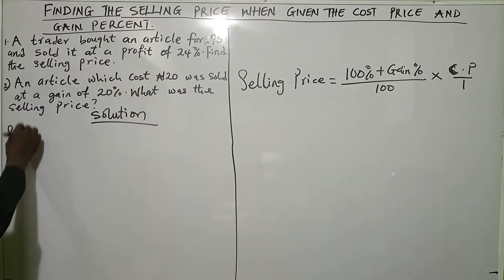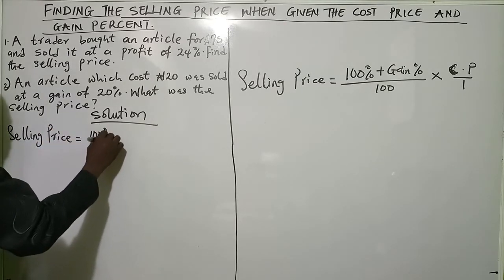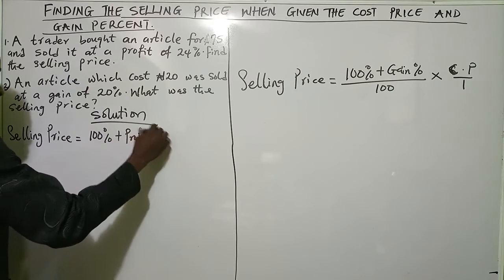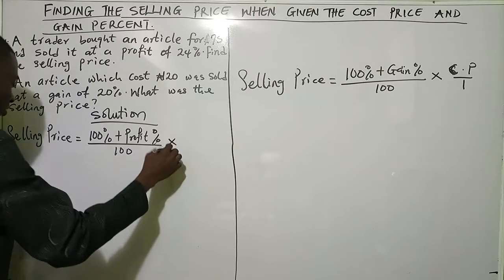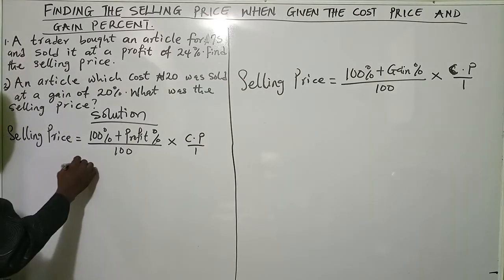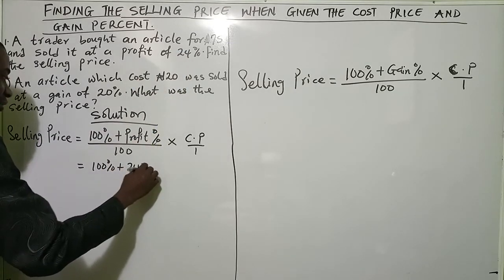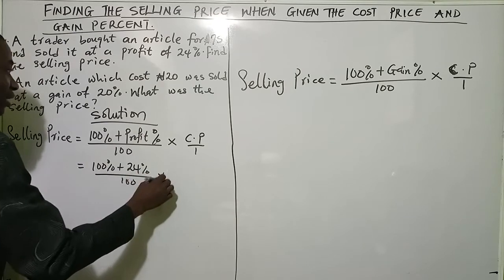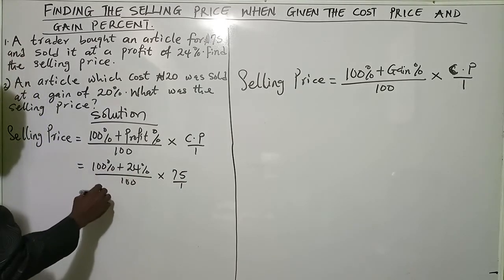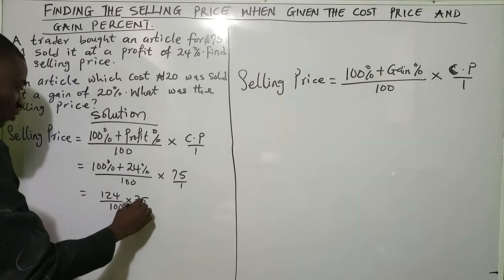So now: Selling Price equals (100% plus profit percent) over 100, times cost price over 1. This equals (100 plus 24) over 100, times 75 over 1. So that gives us 124 over 100, times 75 over 1.